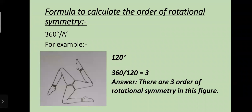The formula to calculate the order of rotational symmetry is 360 degrees divided by the angle (a degrees), where a degrees is equal to the degree of any one angle of the figure. For example, if one angle of a figure is 120 degrees, then 360 divided by 120 equals 3. So that figure has an order of rotational symmetry of three.